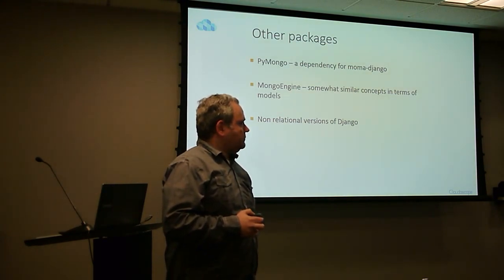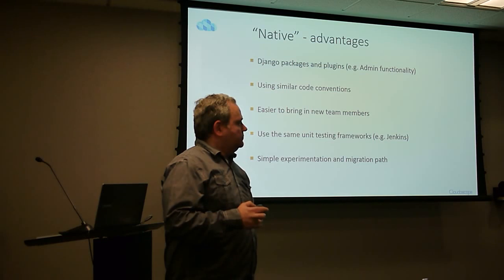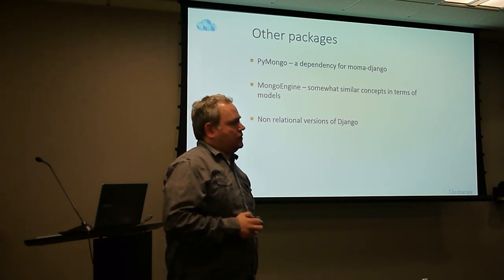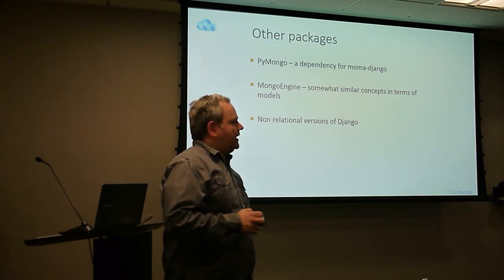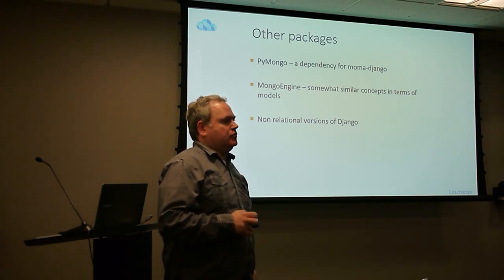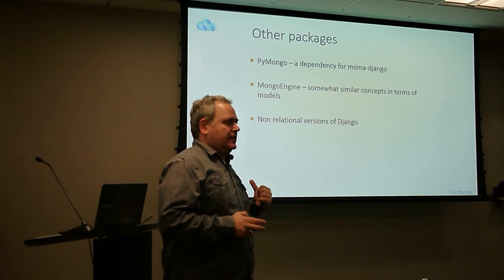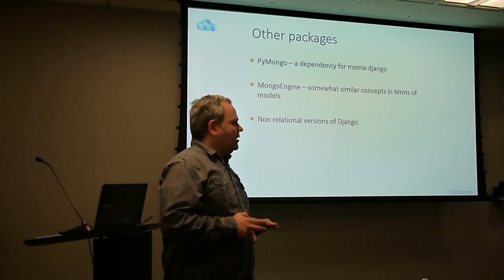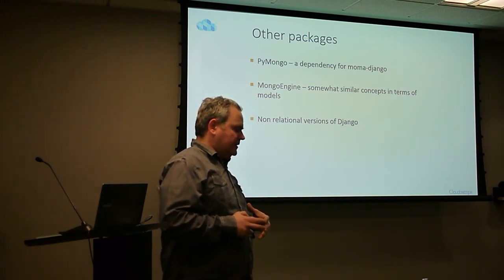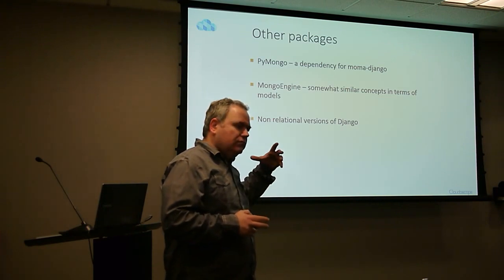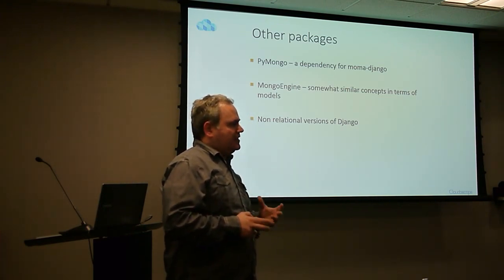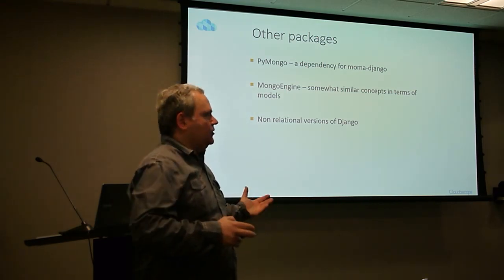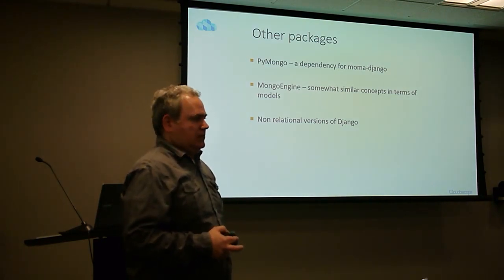Somebody asked: is that a fork of Django to be non-relational? Yeah, that's a non-relational fork. I don't think they ever expected to complete the work and push it back — I think they may have abandoned it. When you work with Django for a while, you see that the relational aspects are so deeply embedded it's very difficult to completely change it to a non-relational. The advantages we saw from going Django-native: you can use packages, similar course of learning, easier to bring in new team members, and unit testing and other frameworks keep working.